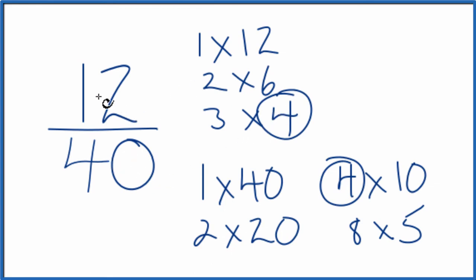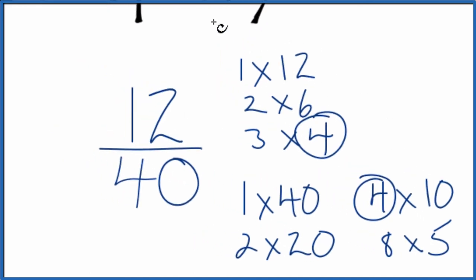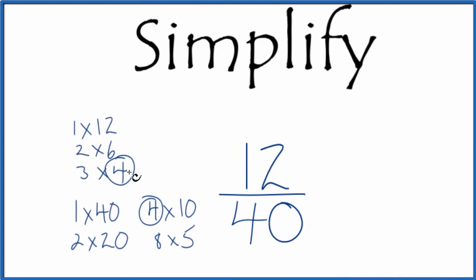So we're going to divide 12 by 4 and then 40 by 4, and we'll have simplified 12 fortieths. Let's move these over here. So we divide 12 by 4, we end up with 3, and we divide 40 by 4, we end up with 10.